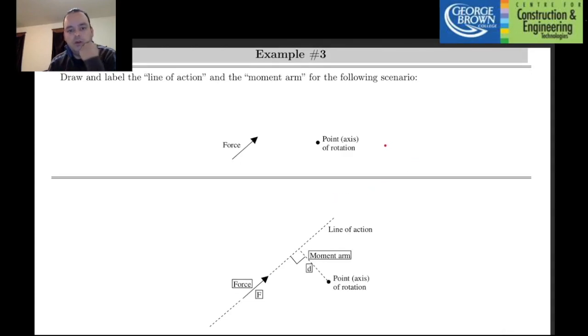I want to talk more about this idea of the distance. Now, it's not just a distance, it's a perpendicular distance. So, in the next example, I'm going to refer to what's called a line of action and explain that a bit further. So, in example 3, you'll see that it's asking you to label and draw a line of action and a moment arm. So, the line of action is this invisible line along which the force is acting. And you can see that line of action doesn't necessarily go through the point of rotation.